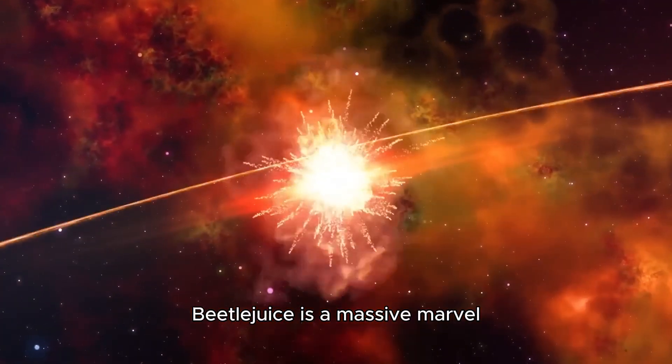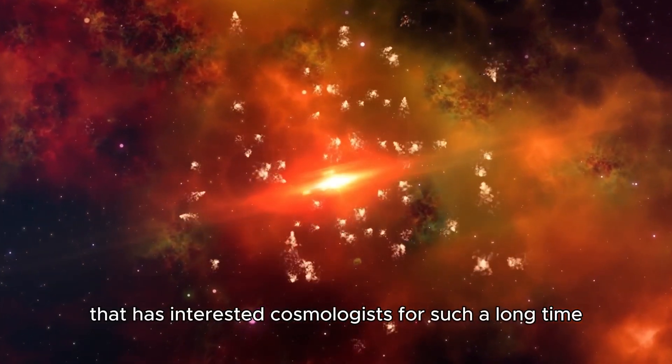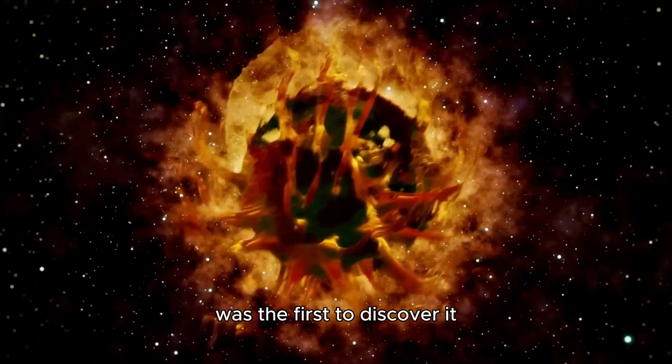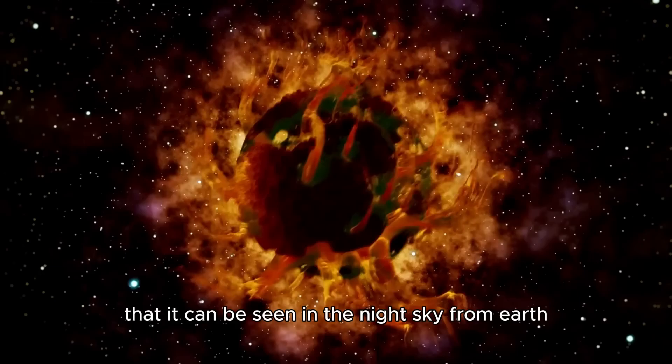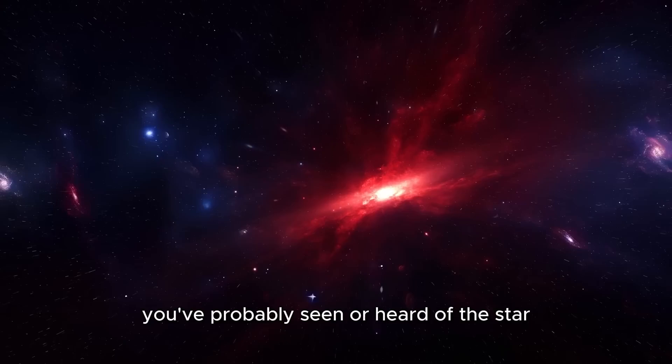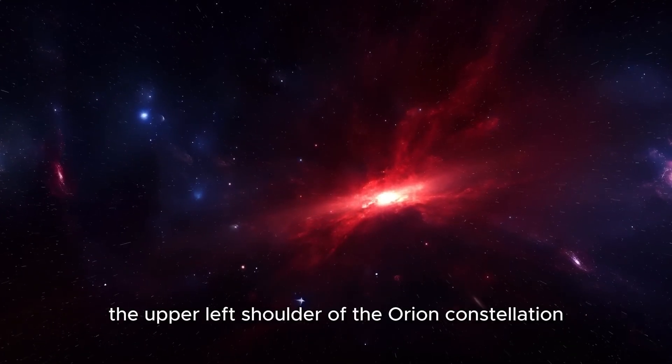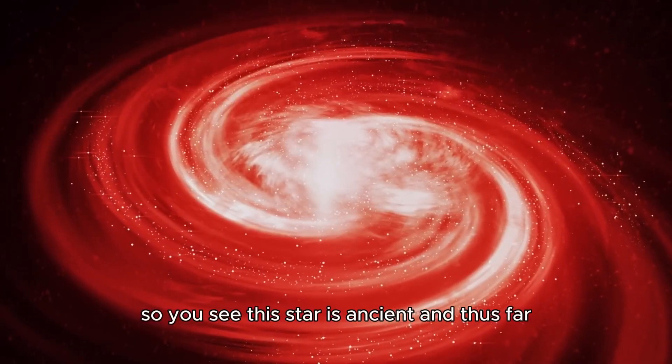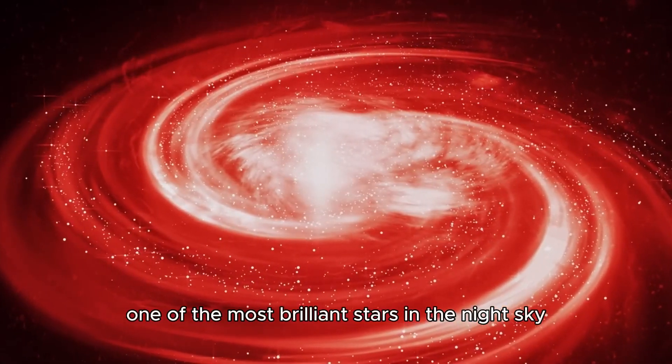Betelgeuse is a massive marvel, a huge star that has interested cosmologists for such a long time. A Greek astronomer named Antonius was the first to discover it. This star is so giant that it can be seen in the night sky from Earth, particularly during winter. If you're into cosmology, you've probably seen or heard of the star. The reddish-orange star marks the upper left shoulder of the Orion constellation. So, you see, this star is ancient and, thus far, quite possibly one of the most brilliant stars in the night sky.